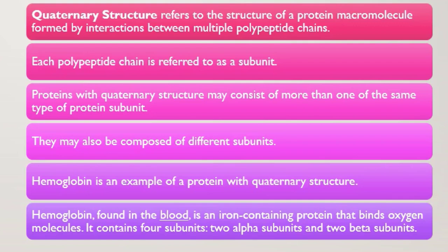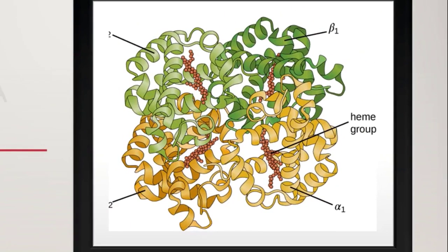Hemoglobin, which is an oxygen-carrying protein found in red blood cells, exhibits quaternary structure. It is an iron-containing protein whose major function is to take oxygen from the lungs to all parts of the body. Hemoglobin is made up of four polypeptide chains: two alpha subunits and two beta subunits. Here we can see this quaternary structure, which is a complicated arrangement of multiple polypeptide chains.